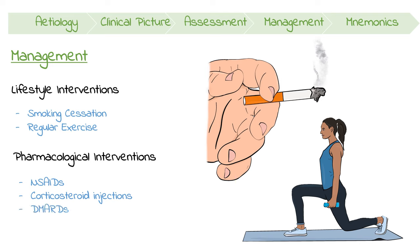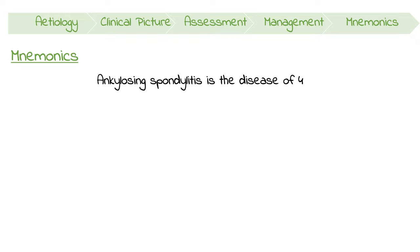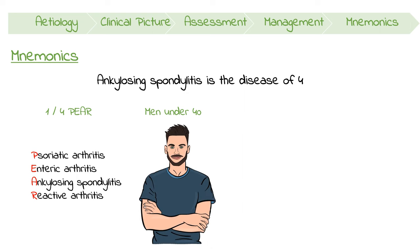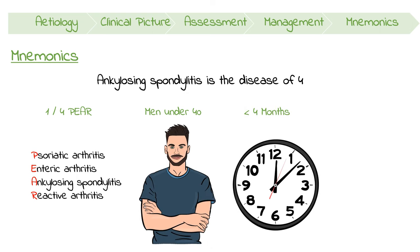Disease-modifying anti-rheumatic drugs can be considered in patients not responsive to the above. A good way to remember key features is that ankylosing spondylitis is the disease of four: it is one of four seronegative spondyloarthritides or PAIR diseases, it affects men under 40, its symptoms last more than four months, and it can be assessed with four things — the Faber test, Menel sign, a pelvic X-ray, and HLA-B27.